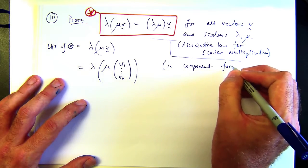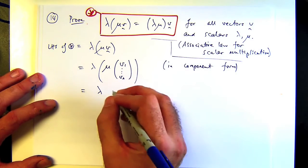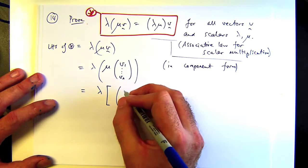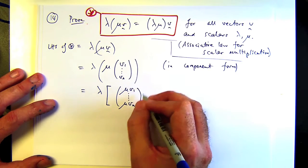All right, so what I can do now is invoke the scalar multiplication of mu with a vector. Just do that in a component-wise fashion. I guess I'll make that a square bracket.